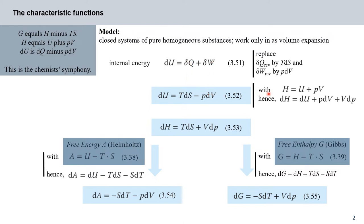We know from the chemist's symphony that H equals U plus PV. Differentiating with respect to P and V gives DH equals DU plus PDV plus VDP. Plugging this into equation 352, we get an expression for the change in enthalpy: DH equals TDS plus VDP. This is equation 353.